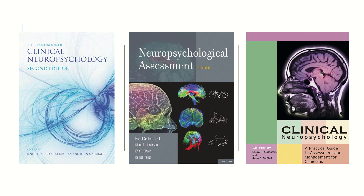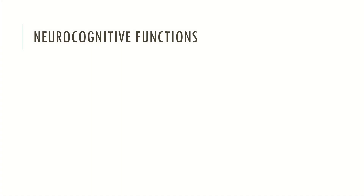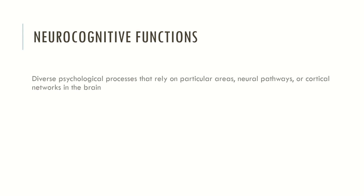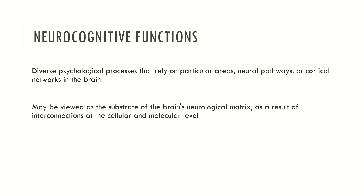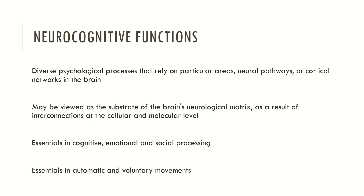Now let's see what neurocognitive functions are. Neurocognitive functions are a diverse psychological process that rely on particular areas, neural pathways or cortical networks in the brain. These mental processes may be viewed as the substrate of the brain's neurological matrix as a result of the interconnections at the cellular and molecular level. Neurocognitive functions are essential in cognitive, emotional and social processing, and are also extremely important in automatic and voluntary movements.